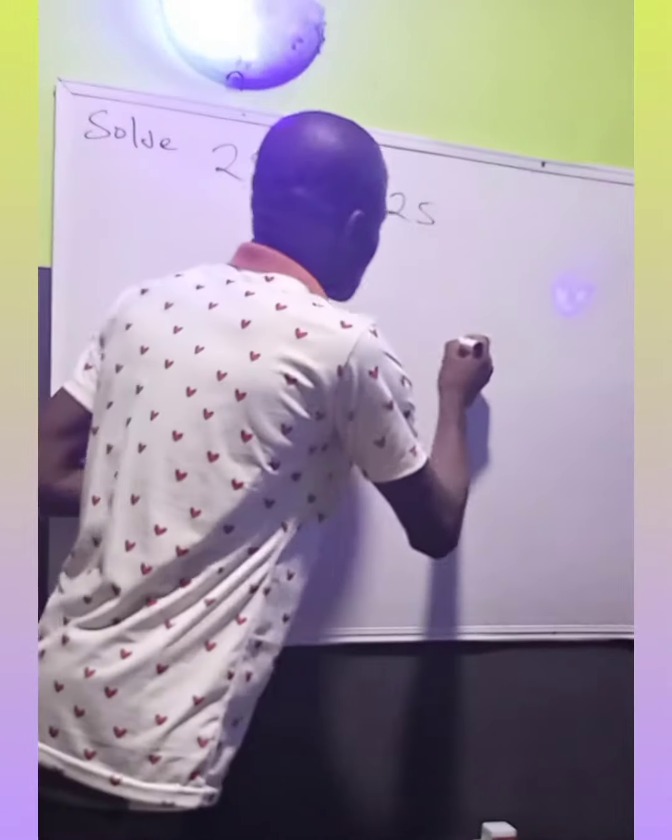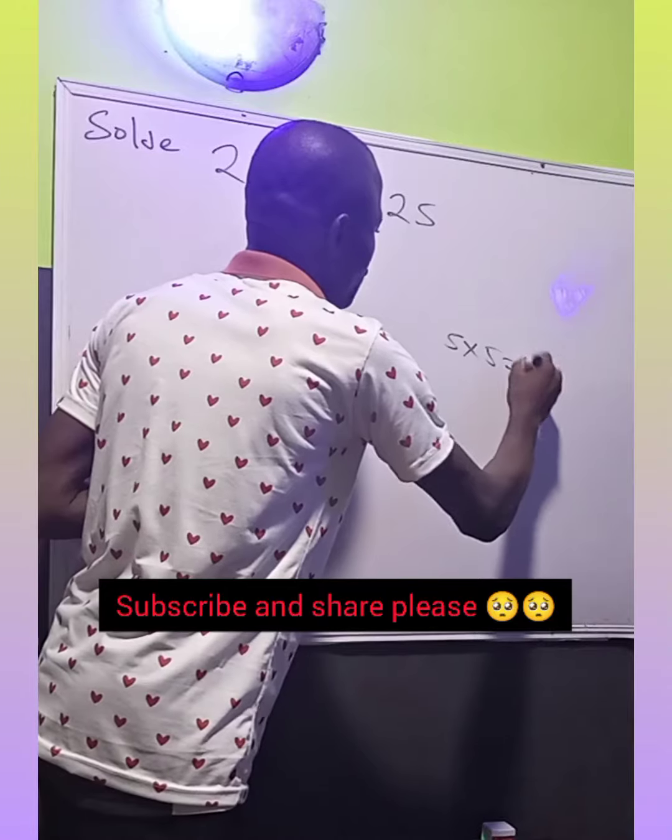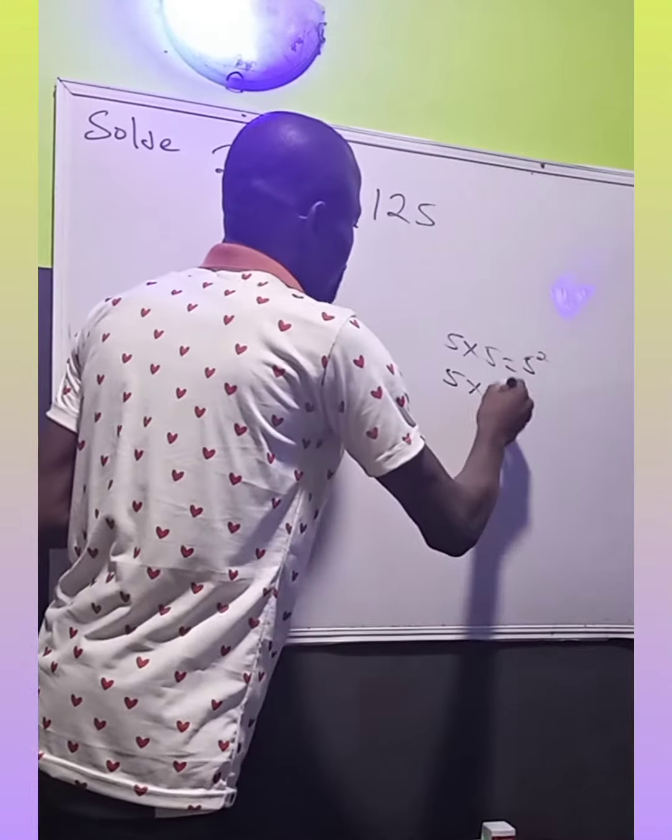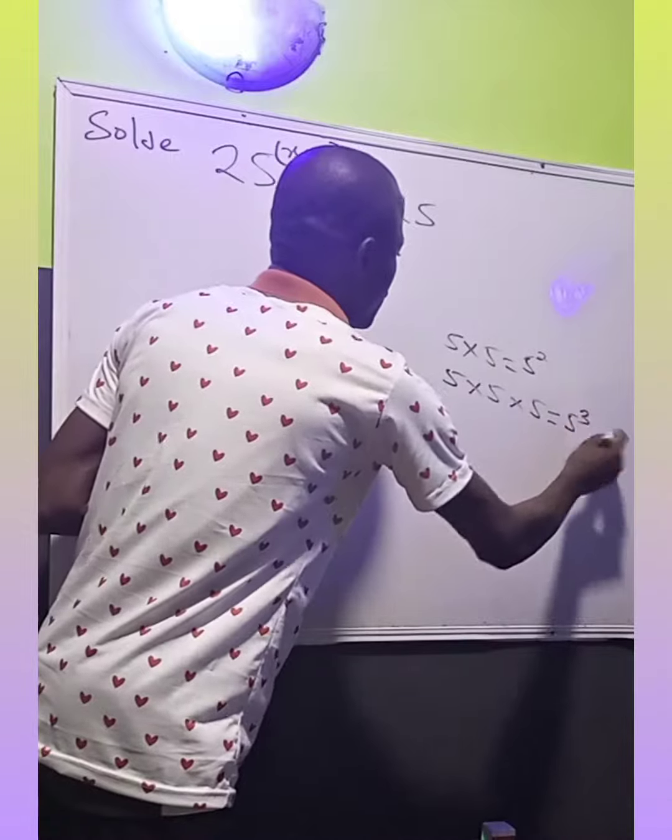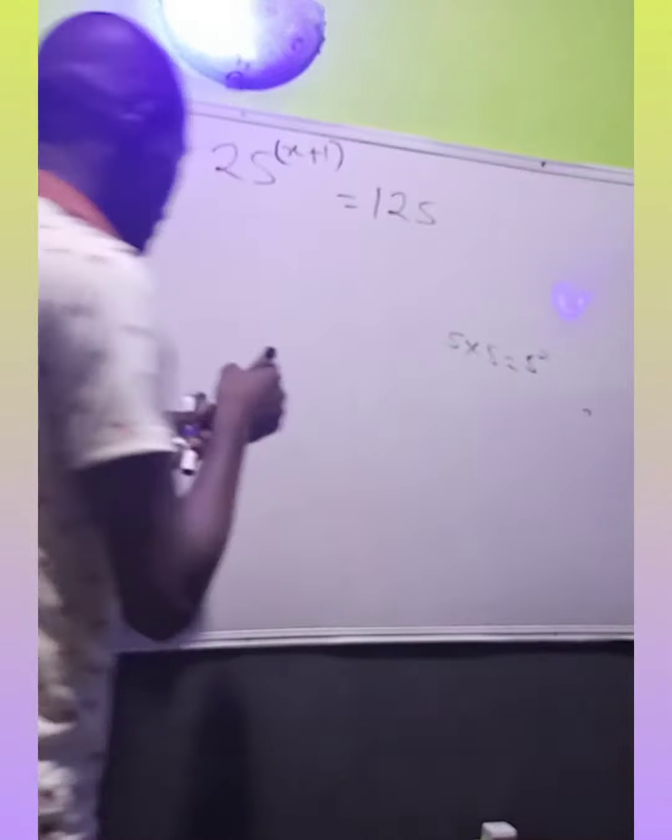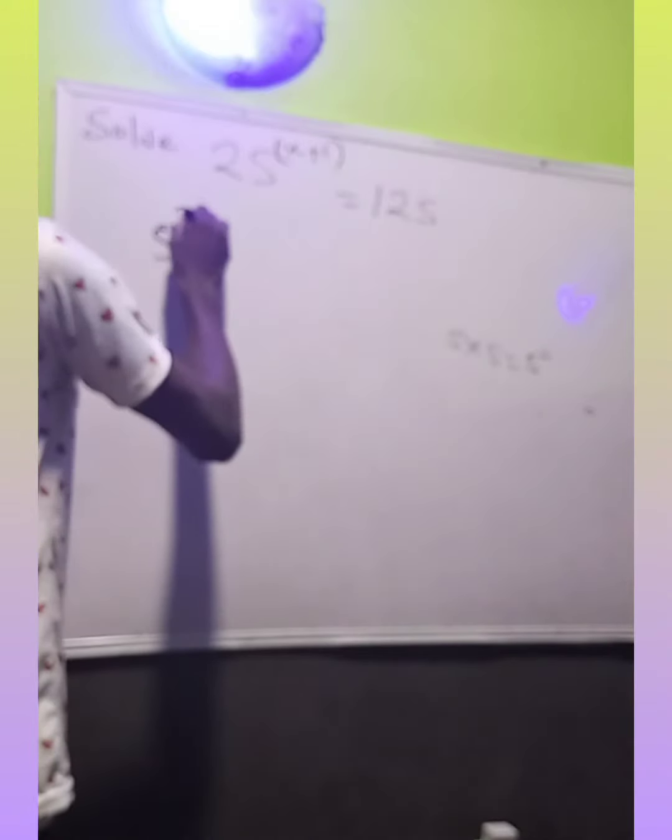Notice that, remember that 5 times 5 equals 5 raised to power 2. 5 times 5 times 5 is 5 raised to power 10. So if we are doing so now in place of 25 we can write 5 raised to power 2.